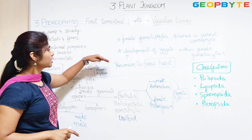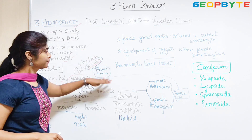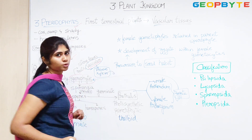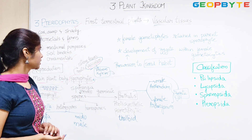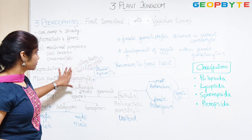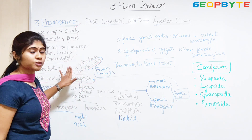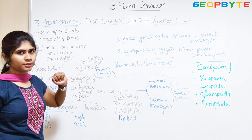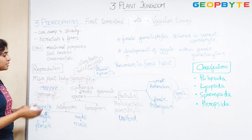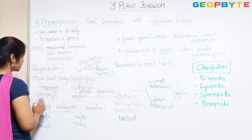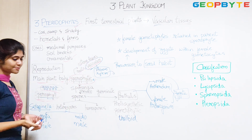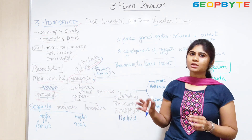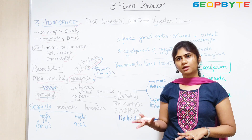Phloem and xylem are the vascular tissues, and we will study these in detail in future chapters. Coming back to the sporophyte: it is well differentiated with true roots, stems, leaves and vascular tissues. The leaves of this sporophyte are called sporophylls. These sporophylls can be large in size or tiny in size, and are called microsporophylls and megasporophylls respectively.